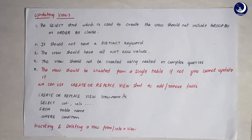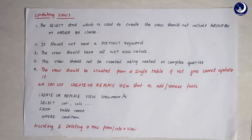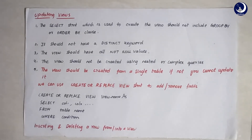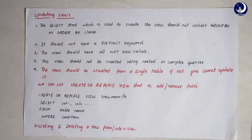The second condition is that the SELECT statement should not have a DISTINCT keyword — if it has a DISTINCT keyword you won't be able to modify it. The third condition is that it should not have all NOT NULL values. The fourth condition is that it should not be created using complex queries or nested queries — nested queries are sub-queries, a query inside a query. The fifth and most important condition is that the view should be created from a single table; if not, you cannot update a view that is created from a collection of tables.